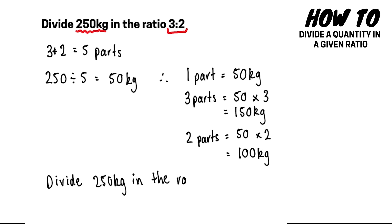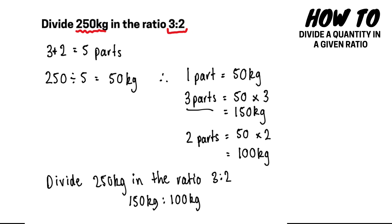Therefore, if we divide 250 kilograms in the ratio 3 to 2, our answer is 150 kilograms to 100 kilograms — writing the three parts first. Once again we can check the answer by adding 150 and 100 together, which gives our original quantity of 250 kilograms.